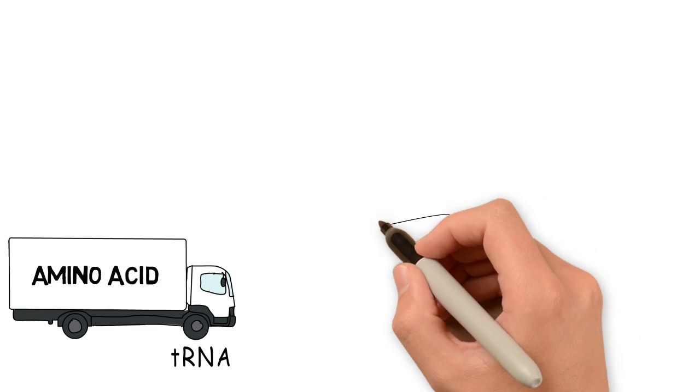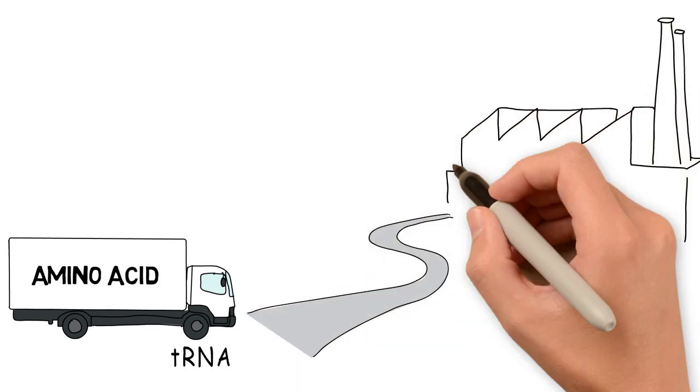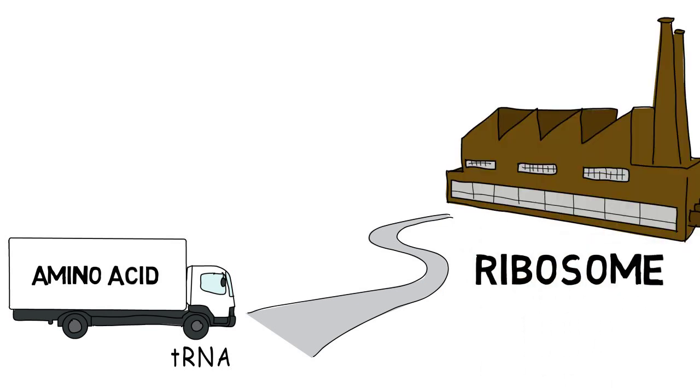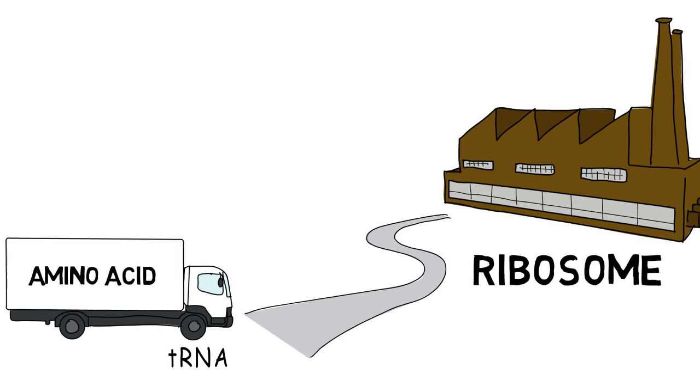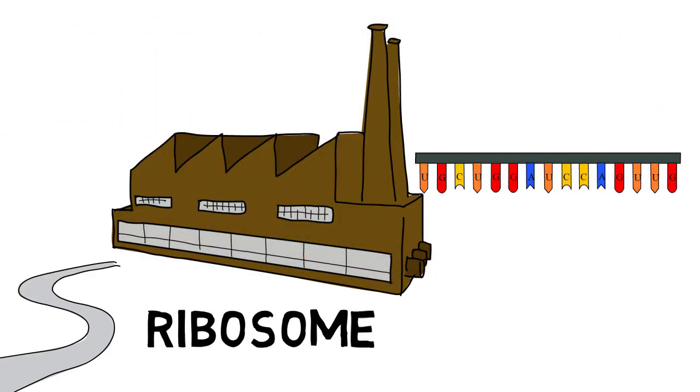A triplet of nucleotides in a messenger RNA, also called a codon, determines which amino acid will be added to the growing protein chain. So basically, the messenger RNA goes through the ribosome, which reads triplets of nucleotides at a time, and makes sure that the correct tRNA brings the corresponding amino acid to build the protein.